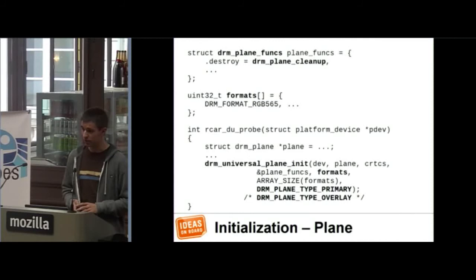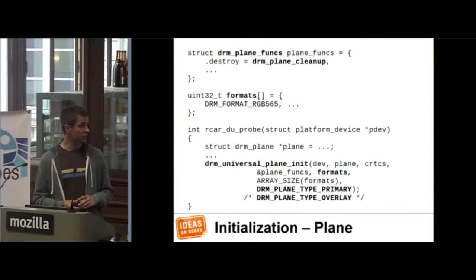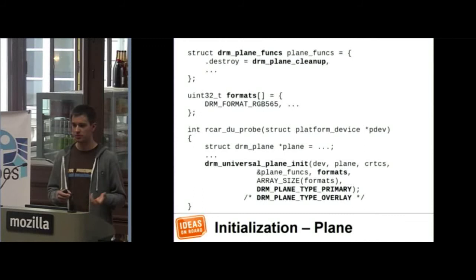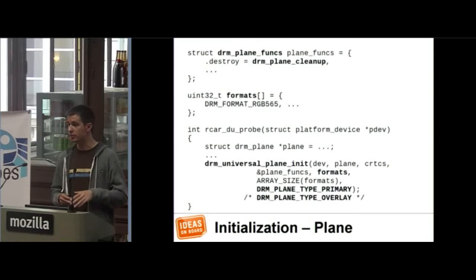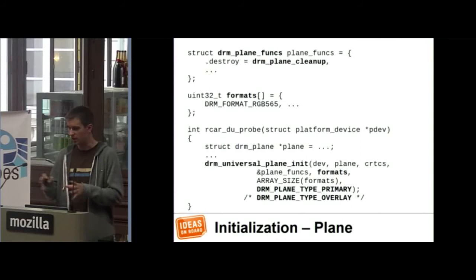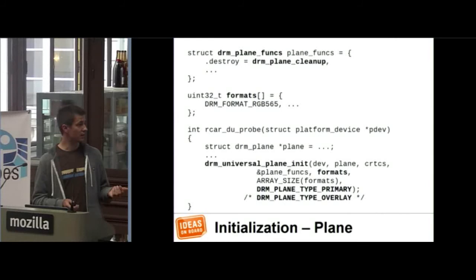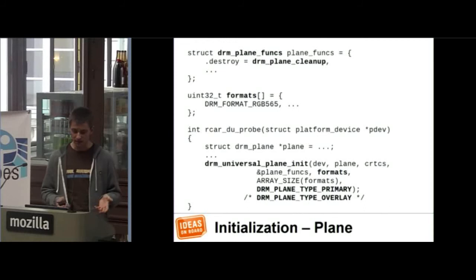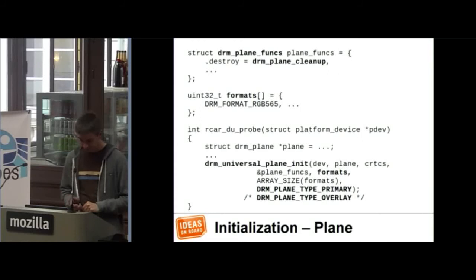The last thing to initialize is the planes. You need to initialize all of them — at least one plane flagged as a primary plane, because if you can't read from memory it's difficult to display anything. Then you can have any number of overlay planes. For the planes, you define a list of formats supported on the plane — for instance, I can read RGB, I can read YUV from memory in this particular format. You also specify the list of CRTCs to which the plane can be connected. Then you initialize it, and use a cleanup function to destroy it. When you have that, you have created all the pieces that need to be exposed to user space.